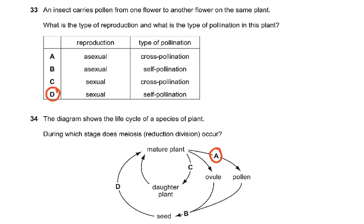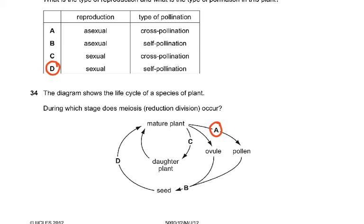Question 33: An insect carries pollen from one flower to another flower on the same plant. What is the type of reproduction and what is the type of pollination in this plant? It's sexual and it's self-pollination. It was from the same plant.